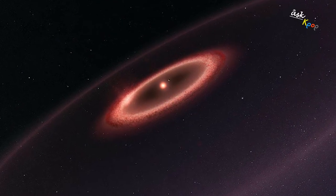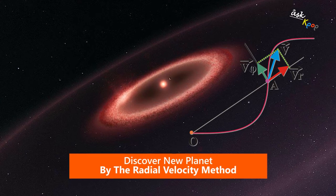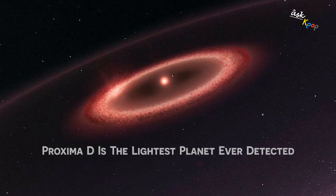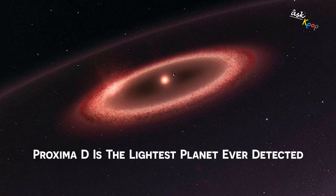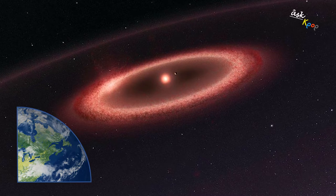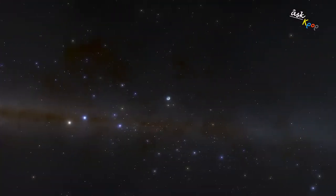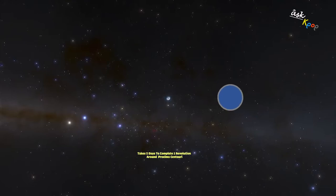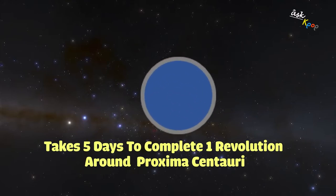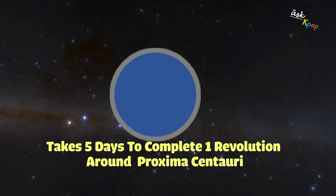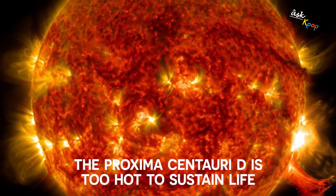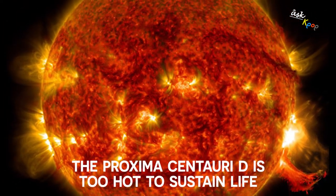Proxima d is a major breakthrough for ESPRESSO and the radial velocity method it uses to detect extrasolar planets, as Proxima d is the lightest planet ever detected with this technique with a mass one-quarter of Earth's mass. This extrasolar planet orbits Proxima Centauri at a distance of about 4 million km. The celestial body takes only five days to complete one revolution around its host star Proxima Centauri. This orbit suggests that Proxima d is too hot to sustain life on Earth.